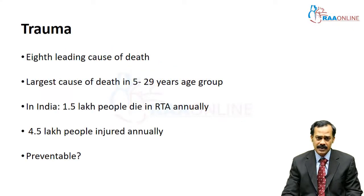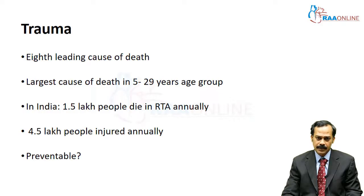As you know, trauma is the eighth leading cause of death in the world, and it is the largest cause of death in the age group of 5 to 29 years. In India, almost 1.5 lakh people die annually because of road traffic accidents, out of the 4.5 lakh people who are getting injured. Is trauma death preventable?